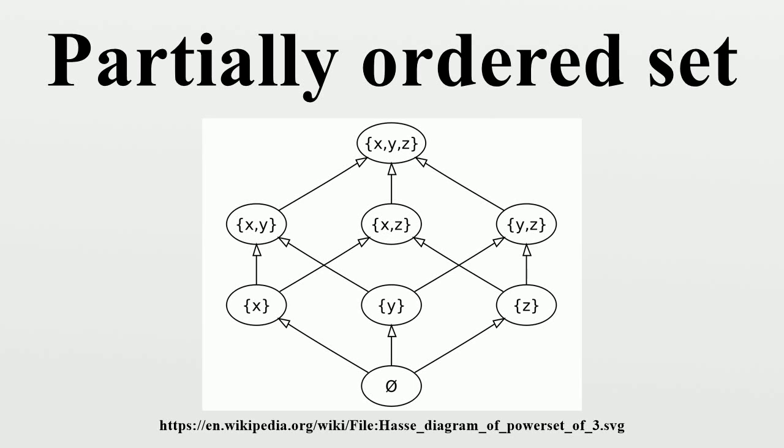A poset consists of a set together with a binary relation that indicates that, for certain pairs of elements in the set, one of the elements precedes the other. Such a relation is called a partial order to reflect the fact that not every pair of elements need be related. For some pairs, it may be that neither element precedes the other in the poset.